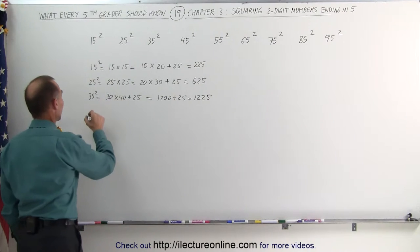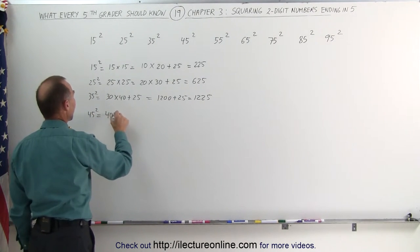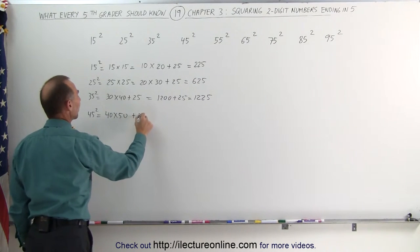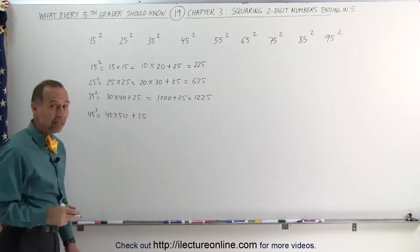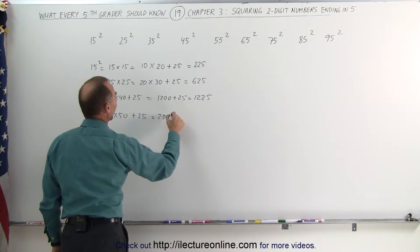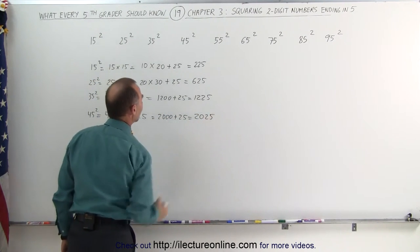Let's try 45 squared. 45 squared, which is 45 times 45, or 40 times 50. Again, subtract 5, add 5, and add 25 to that. Well, 40 times 50 is 4 times 5, which is 20, add 2 zeros, which is 2000, and add 25 to that, which gives you 2025.